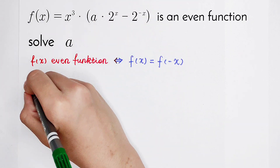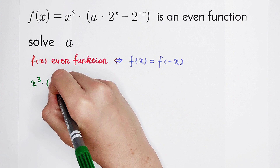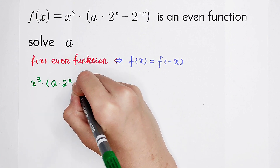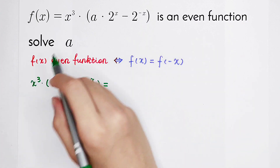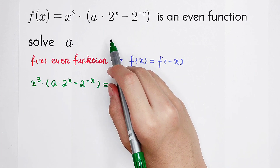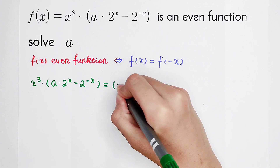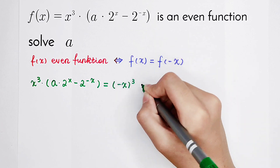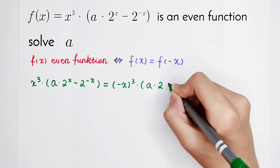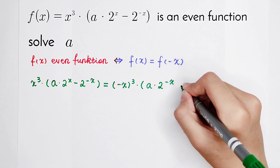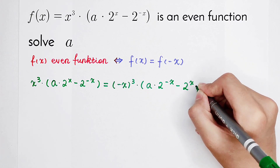So f of x is equal to x cubed, times bracket of a times 2 to the power x, then minus 2 to the power minus x. And this is equal to f of minus x, where all x are replaced by minus x: so it's minus x cubed, times a times 2 to the power minus x, then minus 2 to the power x.